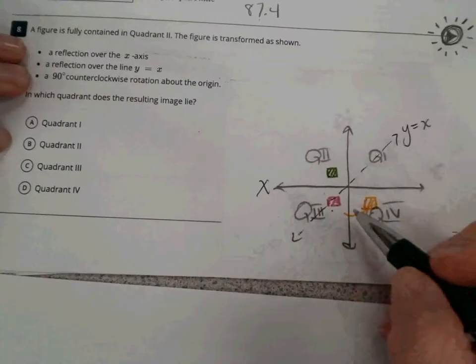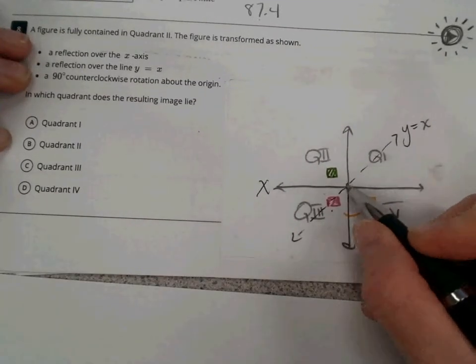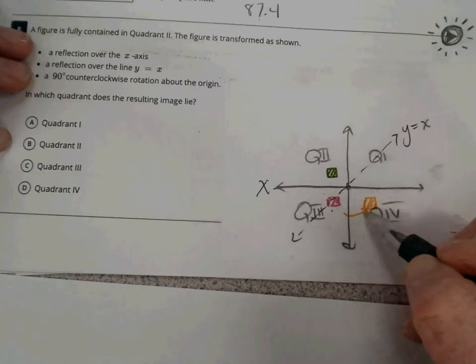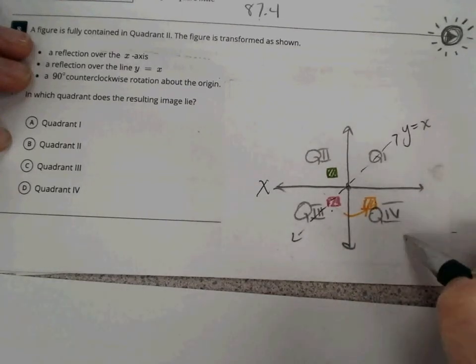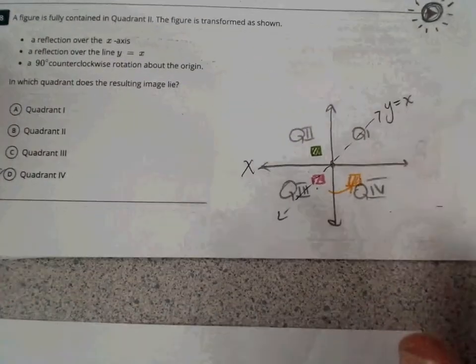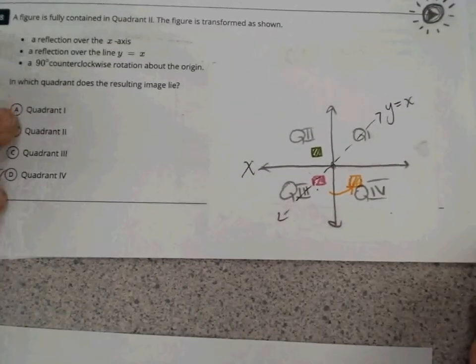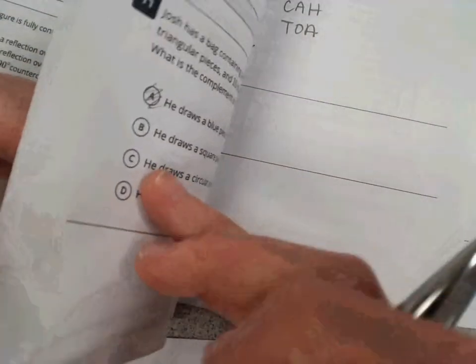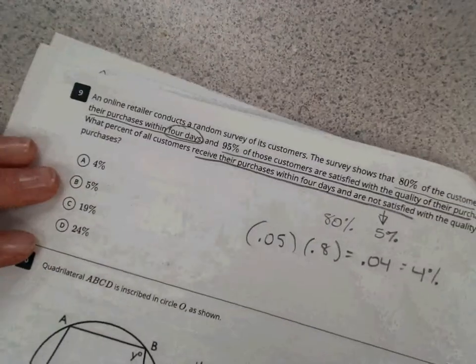And wherever I'm reflecting it, I'm going to still land in that third quadrant. And then, a 90-degree clockwise rotation about the origin. So, here's the origin. If I rotate 90 degrees, this is counterclockwise, I end up in the fourth quadrant. So, the correct answer here is D. Take the time, draw the picture. Not a super tough one there. It just takes a couple minutes maybe to draw it and think it through.